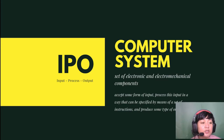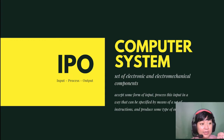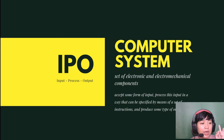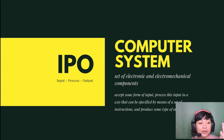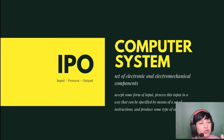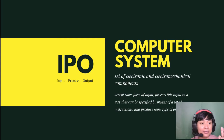All computers follow the same fundamental sequence. First is the input, where they accept the instructions and data. Second is the process, where the data is processed according to the set of instructions. And third is the output, where the computer produces results in the form of information or an action.